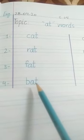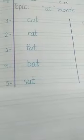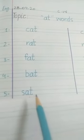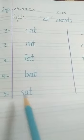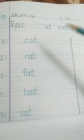Now number five is sat. S-A-T, sat, sat, sat, at, sat. Now again, repeat after me: cat, rat, fat, bat, sat.